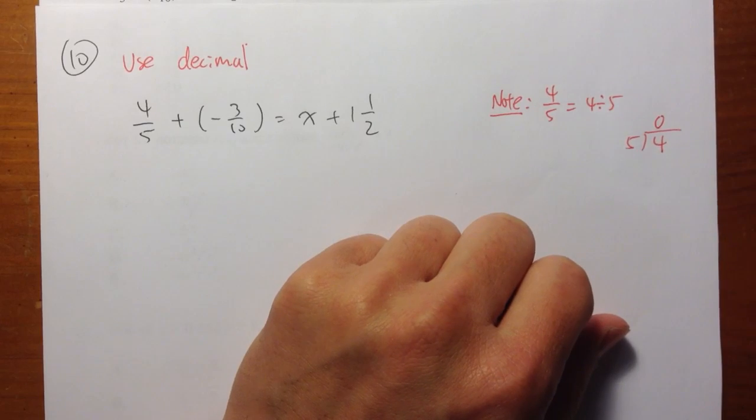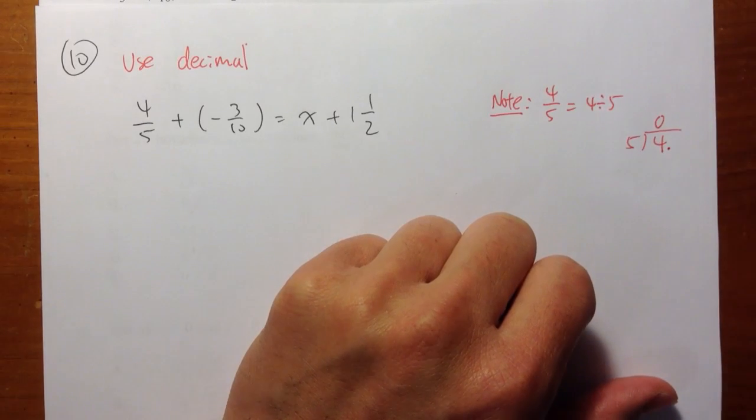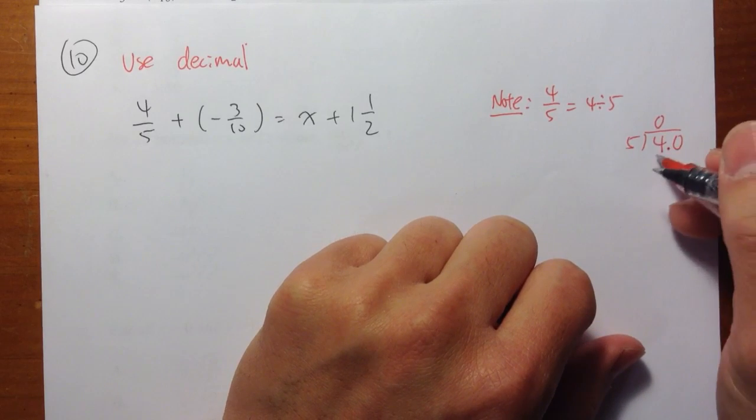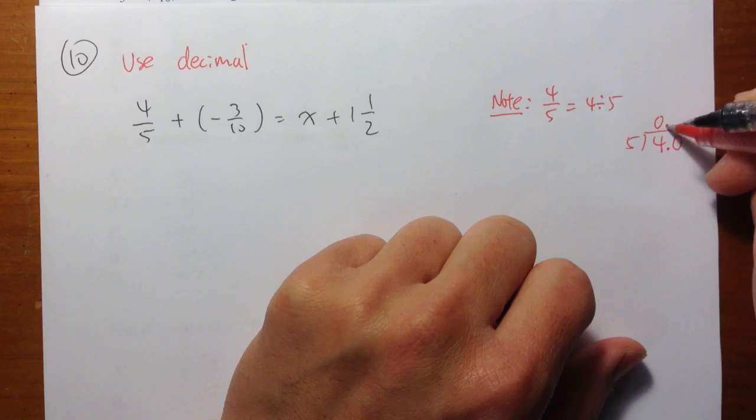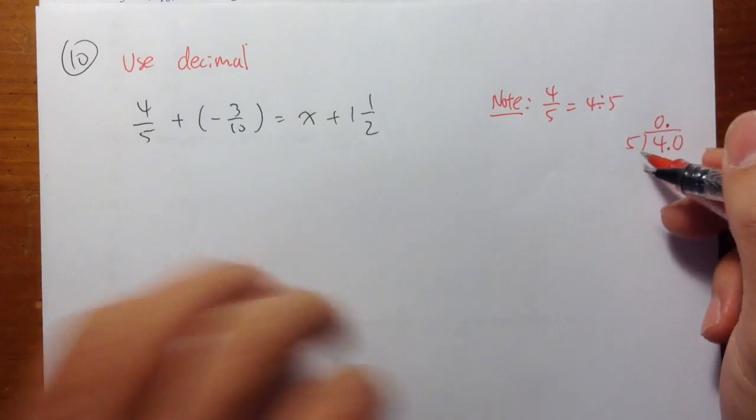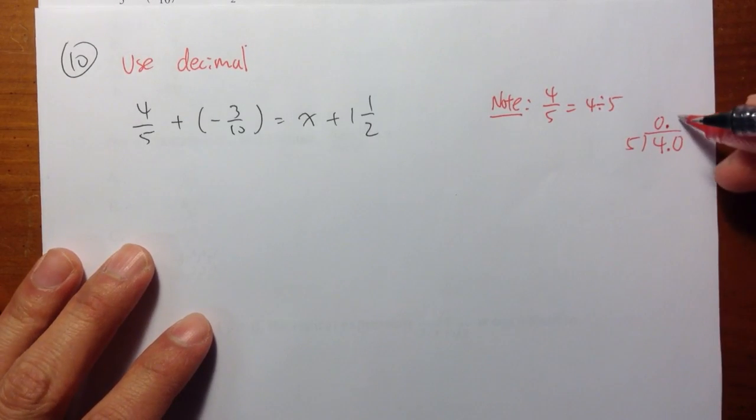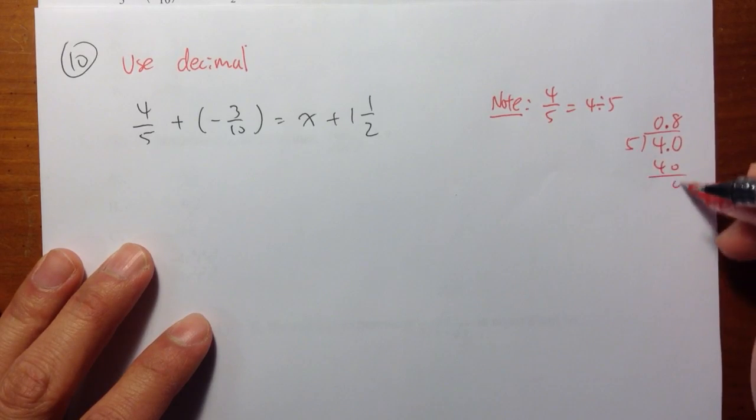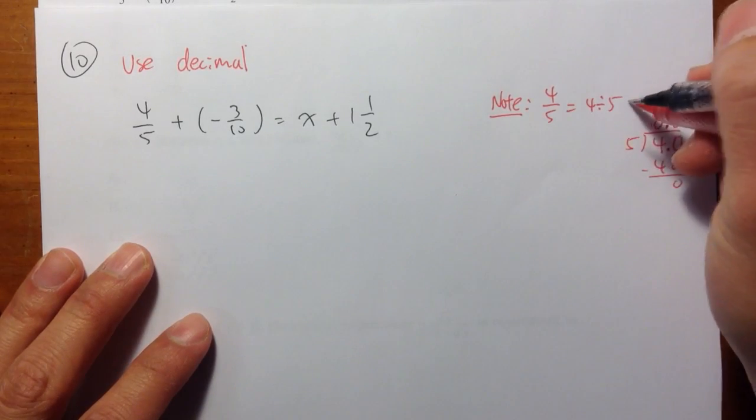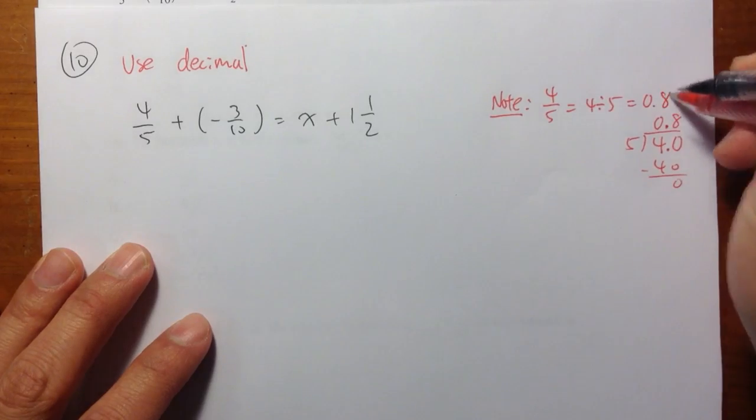5 goes into 4 zero times. So let me put a zero right here. I can put a decimal point after the 4 and put a zero right there. Because 4 is the same as saying 4.0. Line up with the decimal point for the answer. 5 goes into 40, 8 times. 8 times 5 is equal to 40. And that's it. So 4 over 5 is the same as 0.8.